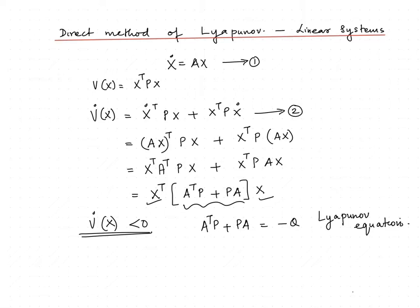We assume that this is equal to minus Q, where Q is positive definite. This equation is called the Lyapunov equation.